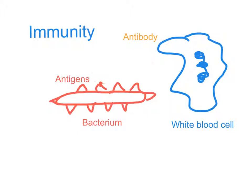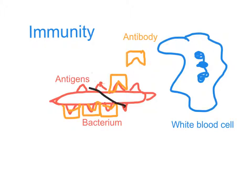But eventually, all being well, the white blood cell will produce an antibody that is the right shape to latch onto the antigens. And as soon as this happens, they start to be produced in more and more numbers. They swamp the bacterium — not just this one but the others like it — and they destroy it. They completely kill the bacterium.